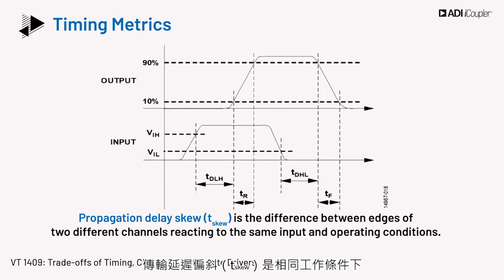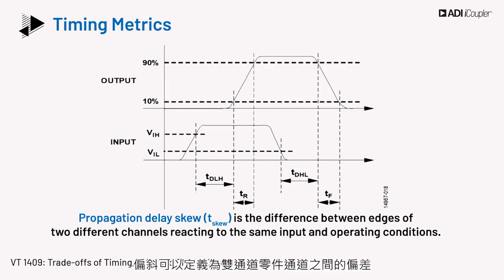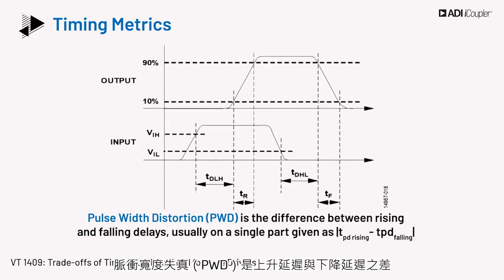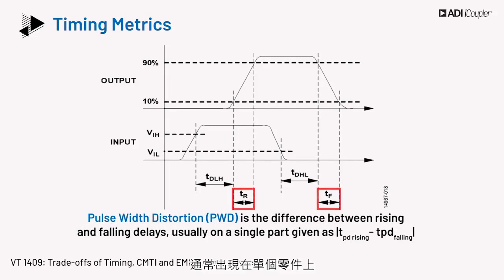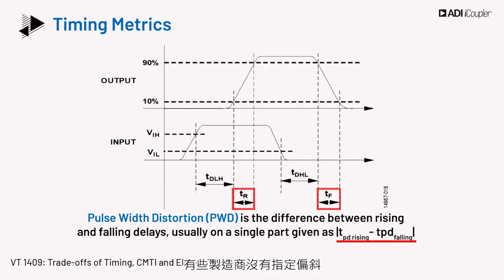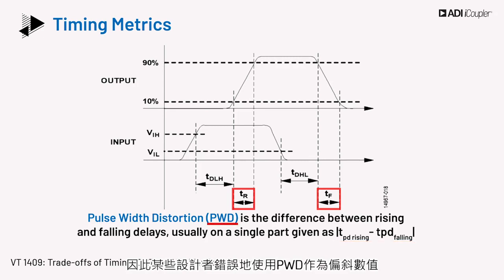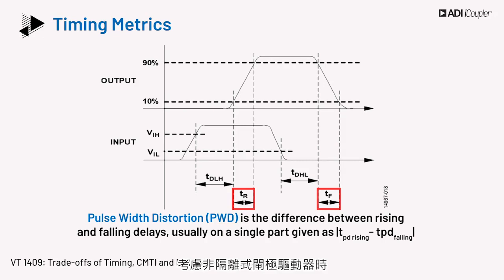Propagation delay skew is the difference between edges of two different channels reacting to the same input and operating conditions. Skew may be defined as per part for dual channel parts, or part to part for single channel parts. Pulse width distortion, PWD, is the difference between rising and falling delays, usually on a single part, and is given as TPD rising minus TPD falling. Some manufacturers aren't specifying skew, so some designers are incorrectly using PWD as the skew number, thus comparing two very different metrics. When considering non-isolated gate drivers, if an external isolator is used, add that time as well.